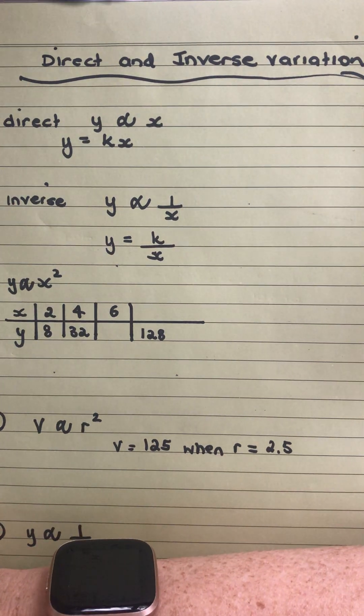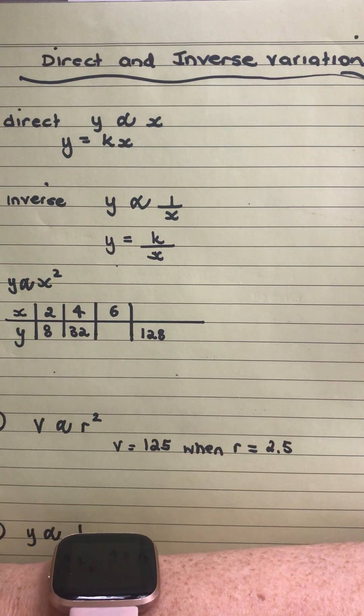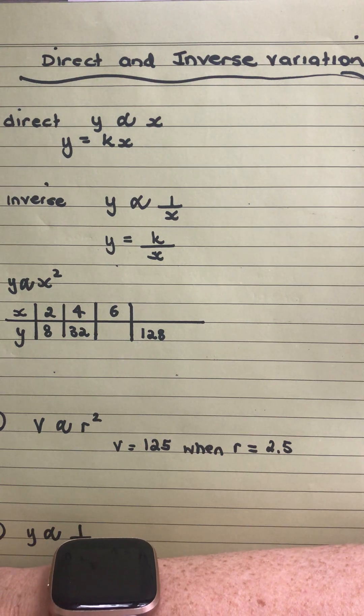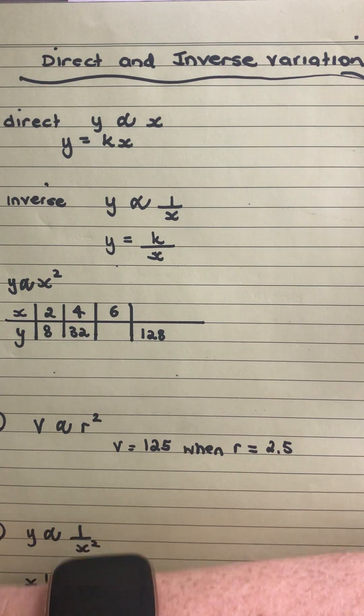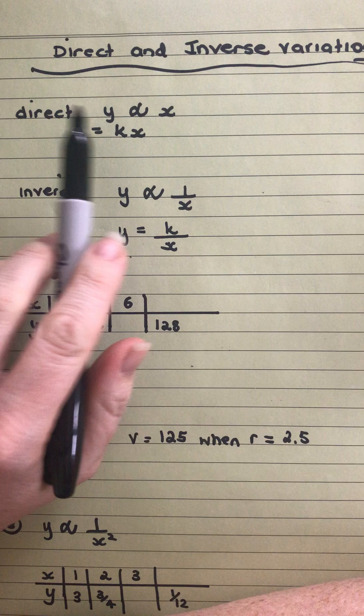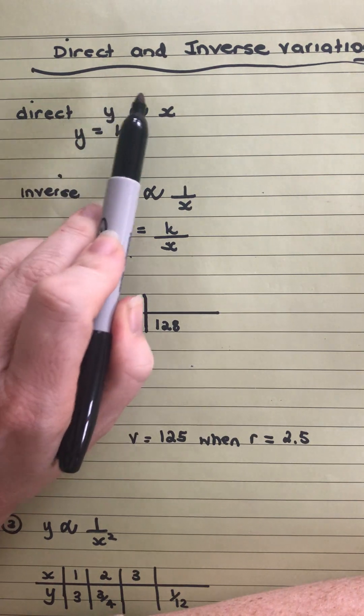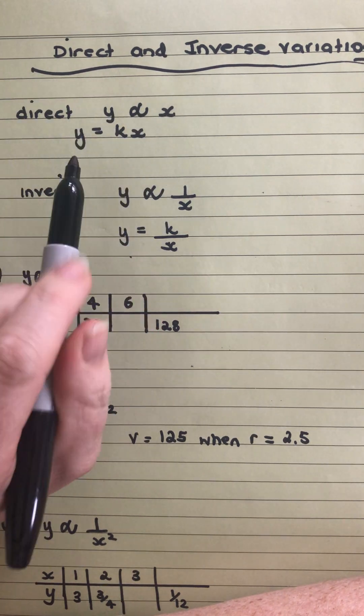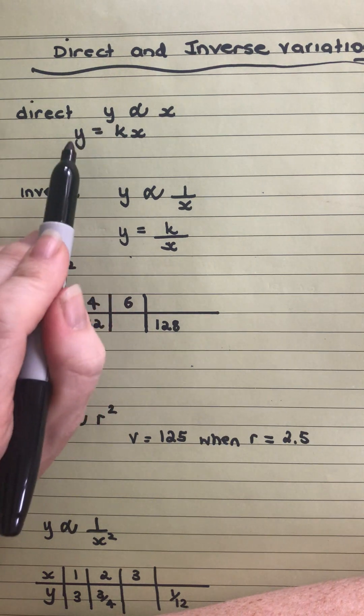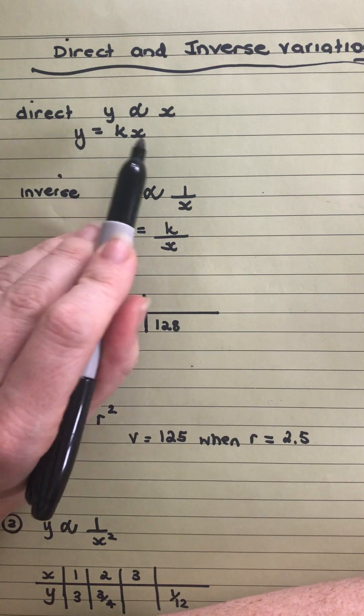Okay, we're having a look at direct and inverse variation. This is specifically tailored to a Unit 1 topic for Maths Methods. When we talk about direct variation, we can say that y is proportional to x. If we want to write it with the equal sign, we need to write that y is equal to kx.